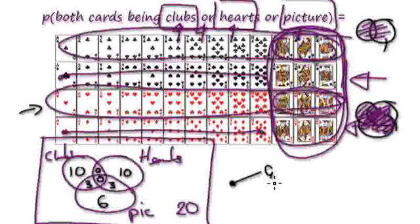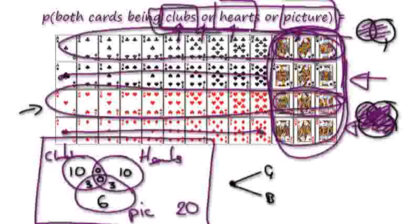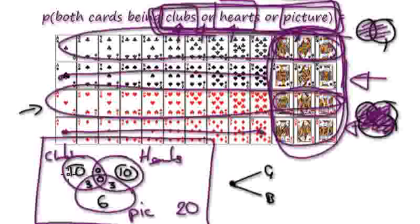Let's draw our tree diagram. On the first card we could pick — well, it could be good or it could be bad. Good being the cards that fall into these conditions. Good is the union of all three, so it would be 10 + 10 + 6 + 3 + 3 = 32. So good is 32 over 52.